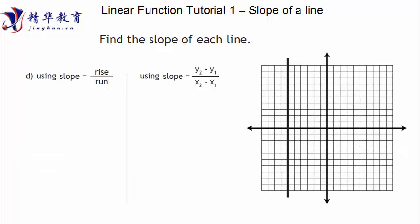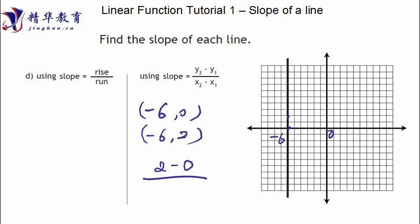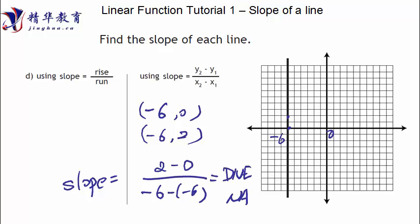The last one: vertical line. We have a vertical line. The run can be nothing, but the rise can be a lot. We're looking for a point here, which is (negative 6, 0). And then there's another point: (negative 6, 2). So that's 2 minus 0 over negative 6 minus negative 6. We have a problem — the denominator equals zero. We all know in math that the denominator can never equal zero — that's impossible. So actually what does that mean for the slope? Impossible means the slope does not exist. Always write N/A. There is no slope for a vertical line.